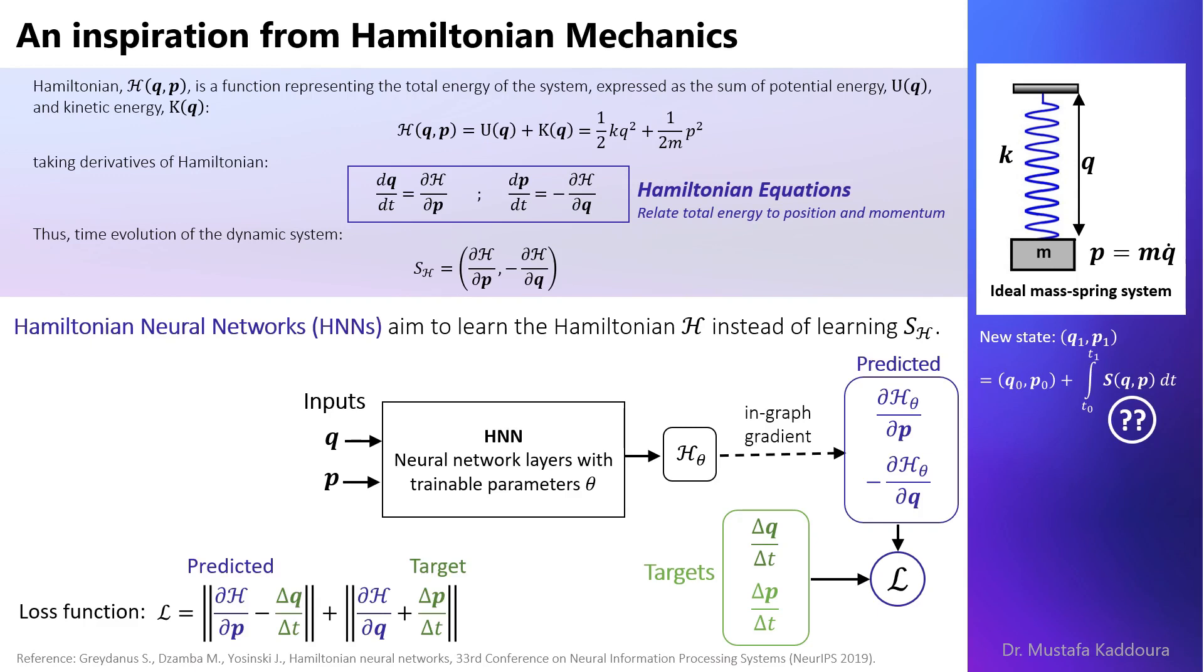During training, when the optimizer tends to minimize the loss function, the Hamiltonian equations are satisfied. Thus the network learned to conserve energy straight from the data.